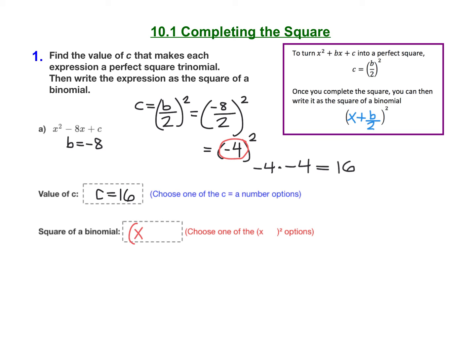So our factored form will be x minus 4 quantity squared. So find that and drag and drop it into the box.